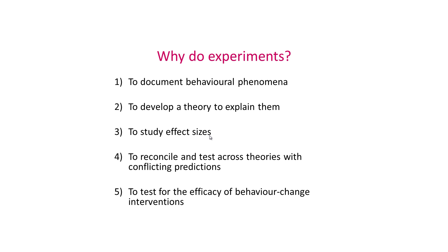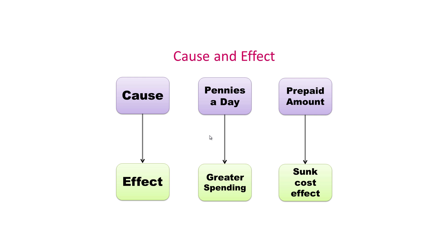So those are five good reasons for why experiments are typically conducted. Every experiment studies the relationship between one variable that we call a cause and its consequence, which is often called an effect. In a nutshell, every experiment tries to show that a particular cause results in a specific effect.